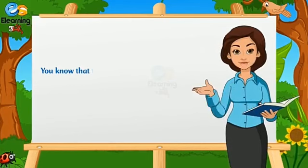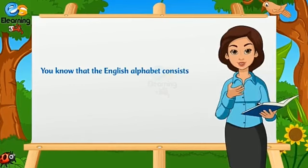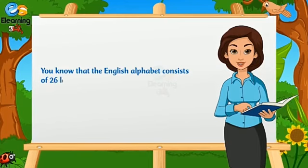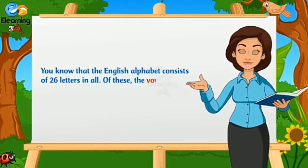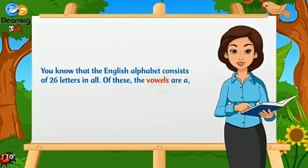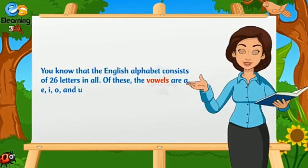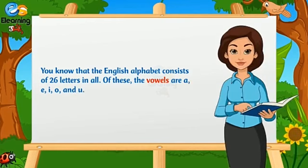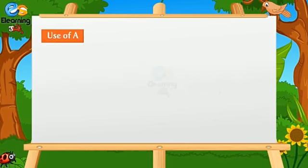You know that the English alphabet consists of 26 letters. In all of these, the vowels are A, E, I, O and U. The rest of them are known as consonants.